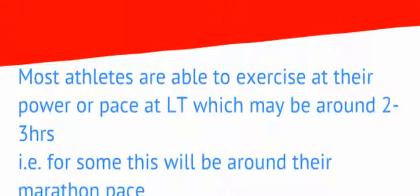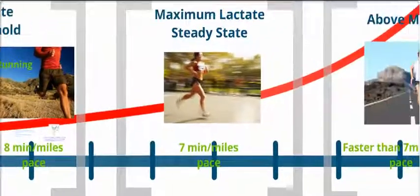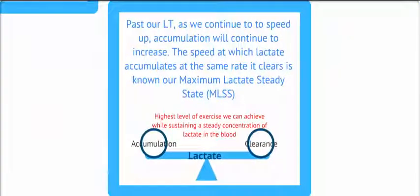Most athletes are able to exercise at their power or pace at lactate threshold, which may be around 2 to 3 hours. As you keep speeding up, you will eventually reach a second threshold, known as the maximum lactate steady state.